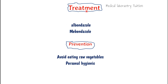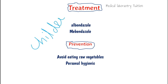Treatment includes albendazole and mebendazole. For prevention, the very common rule in parasitology applies: avoid eating raw vegetables, and personal hygiene is very important — especially in children, since Ascaris lumbricoides mainly causes infection in children.